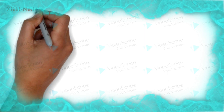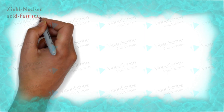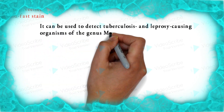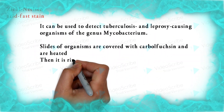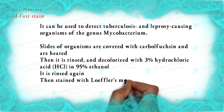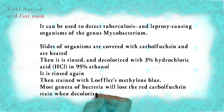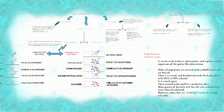The last type of staining is Ziehl-Neelsen acid-fast staining. It is used for the detection of tuberculosis and leprosy-causing organisms. The slides are covered with carbol fuchsin and are heated, then rinsed with 3% and 95% ethanol. After rinsing again, positive results are seen by a bright color.